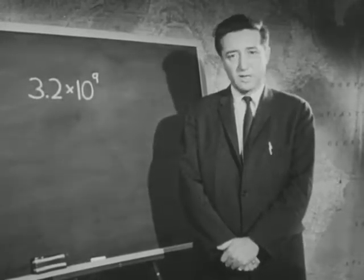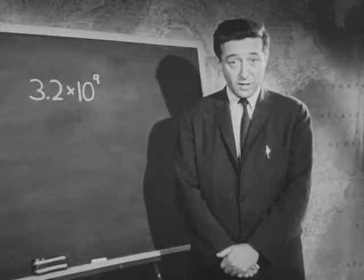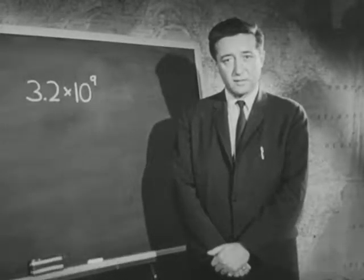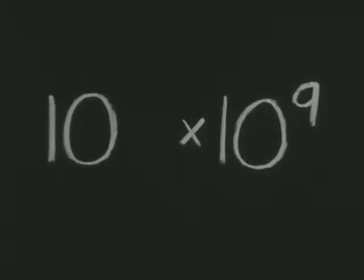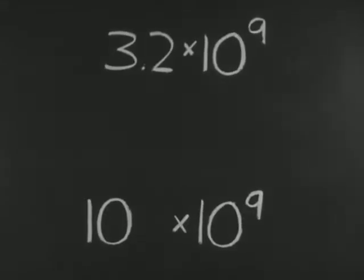Now, can we find some indication for a maximum limit for the age of the earth? It so happens that we can. By making special calculations on the relative abundances of U-235 and U-238 which were present when the elements were formed, and comparing that ratio with their present relative abundances, we can arrive at an outside limit of the age of the earth of 10 times ten to the ninth years, or 10 billion years. We can say, then, that the age of the earth lies between 3.2 times ten to the ninth years, the age of the oldest known rock, and 10 times ten to the ninth years.